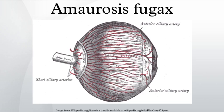Ocular causes include iritis, keratitis, blepharitis, optic disc drusen, posterior vitreous detachment, closed-angle glaucoma, transient elevation of intraocular pressure, intraocular hemorrhage, coloboma, myopia, orbital hemangioma, orbital osteoma, and keratoconjunctivitis sicca.